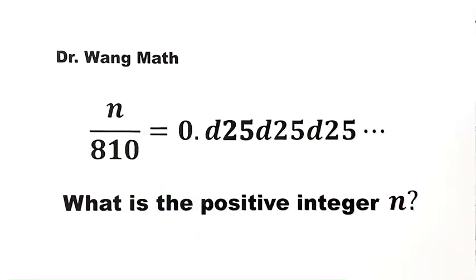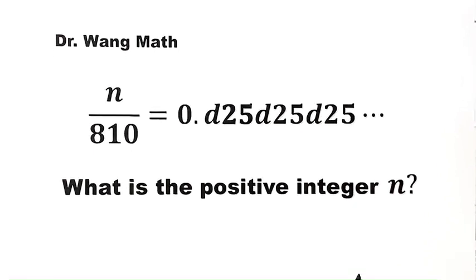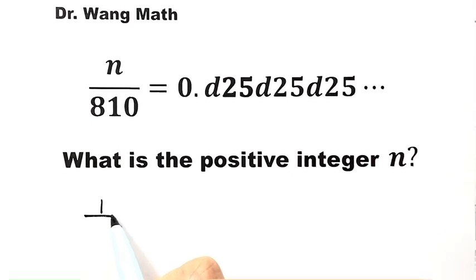First, let's review some simple repeating decimal results. 1 over 9 equals 0.1 repeating, which is the same as 0.111 and so on.